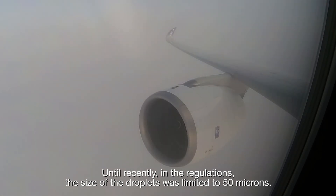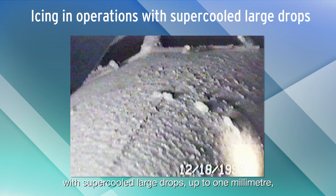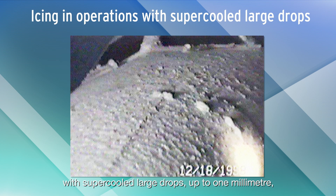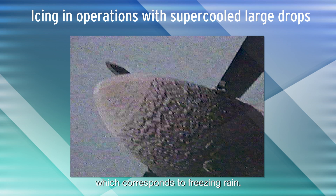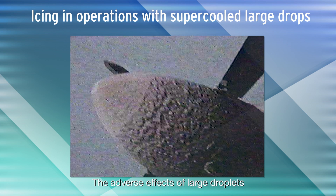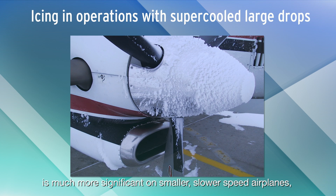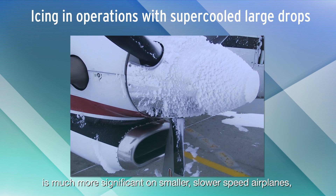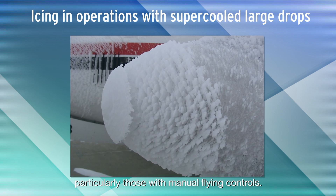Until recently, in the regulations, the size of the droplets was limited to 50 microns. New amendments consider the icing risks with supercooled large drops, up to 1 mm, which corresponds to freezing rain. The adverse effects of large droplets is much more significant on smaller, slower speed airplanes, particularly those with manual flying controls.